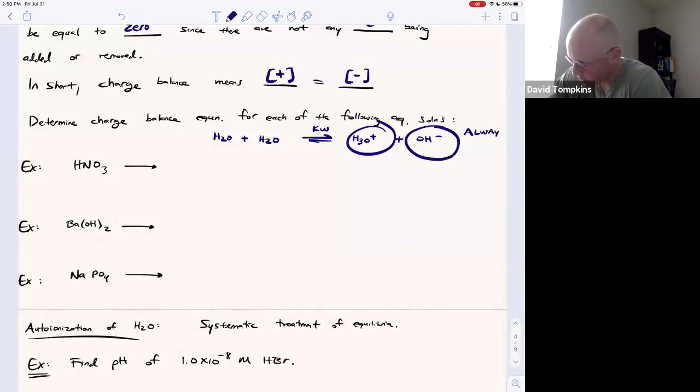No matter how acidic or basic the solution is, there's always some hydroxide and always some hydronium. That has to be true for KW to be defined. What you want to do is think about what other ions are present for each acid or base.